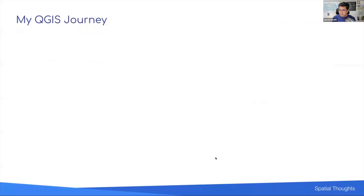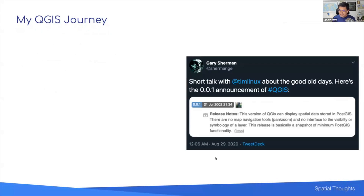Let me share a brief about my QGIS journey. QGIS has been around for a long time. This is a screenshot of a tweet by Gary Sherman, the founder of QGIS, who tweeted about the first version released in 2002. QGIS was initially developed as a viewer for the PostGIS database — PostGIS had a spatial extension to load spatial data, but there was no way to visualize the results, so Gary Sherman developed this small piece of software. It has since grown into a large project with hundreds of contributors and millions of users worldwide.